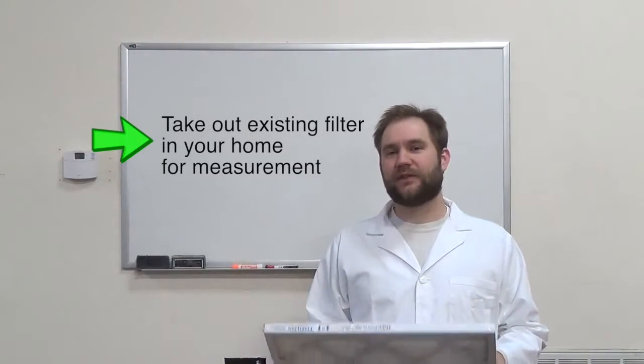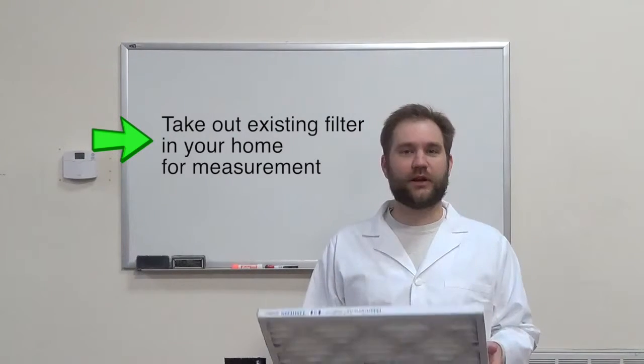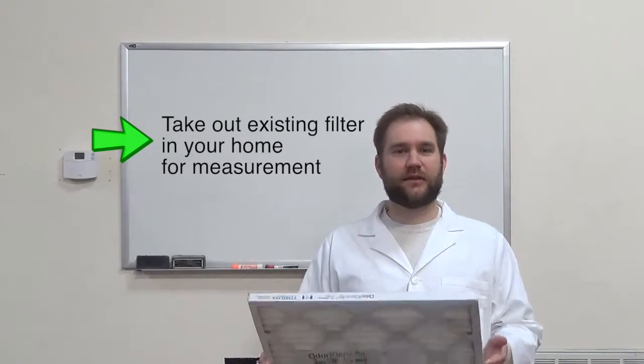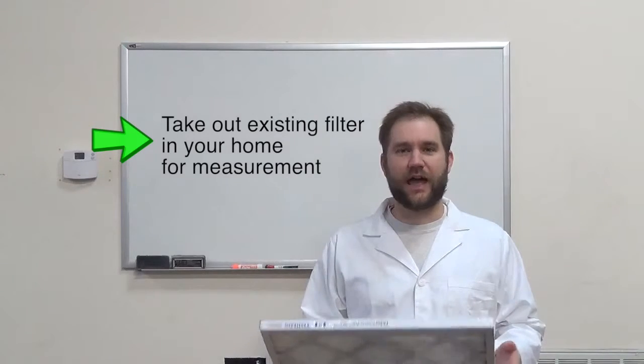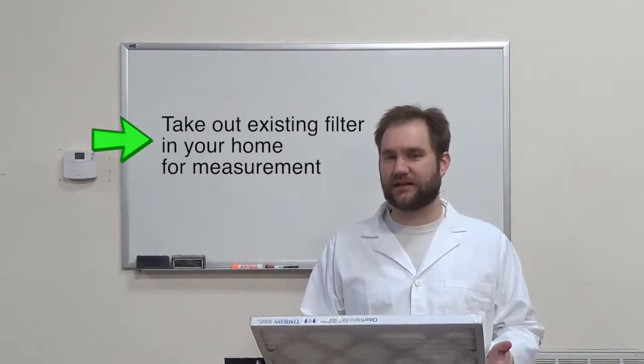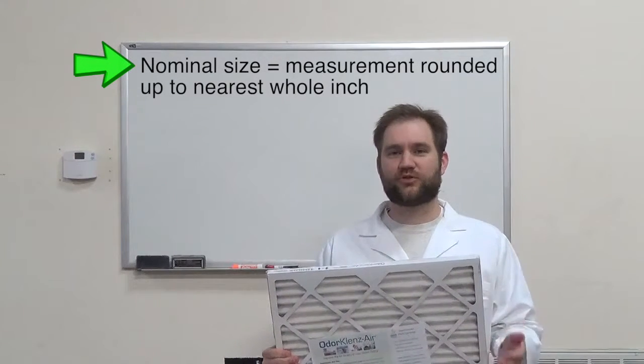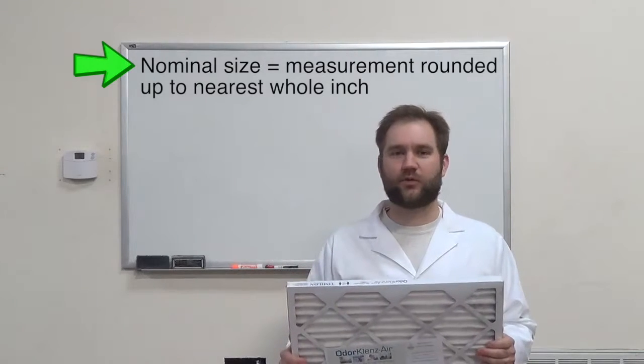First of all, you can go ahead and take out the existing air filter in your home's air handling system or return air register and take a look at it. If it actually has the measurements on it, there's probably two different sets of measurements. There's the actual and the nominal size measurements, so jot those down. The nominal size measurements are the measurements rounded up to the nearest whole inch, and that's how you'll be ordering those on our website.